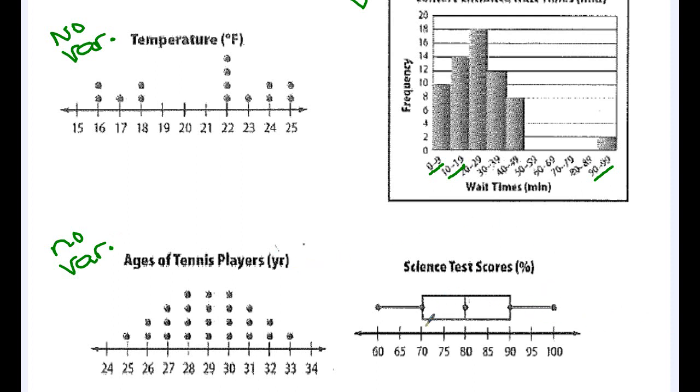Okay, this last graph is what we call a box plot, and we're going to learn about this in our next lesson, and these are fun. But if you look, we're describing science test scores, the percents. So it starts at 60% and it goes all the way to 100%.